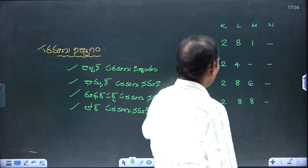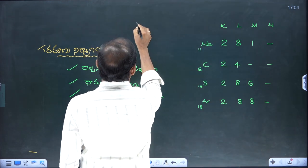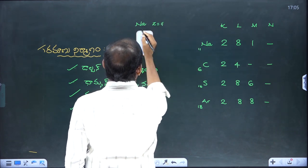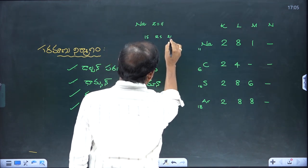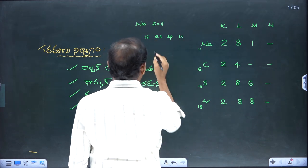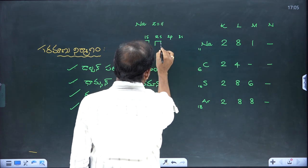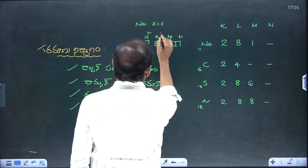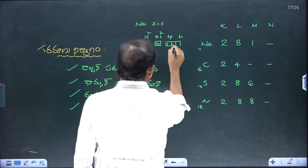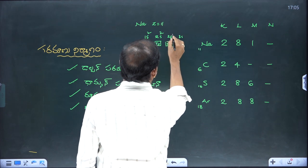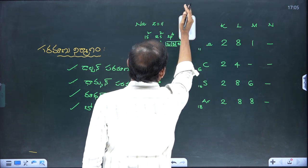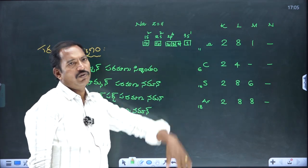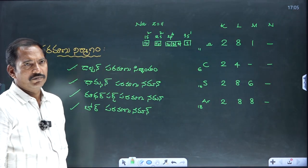Now we look at the quantum mechanical model and Moeller diagram. The notation is: 1s², 2s², 2p, 3s, 3p. Using the Moeller diagram, the configuration is written as 1s¹, 2s¹, 2p, giving: 1s² 2s² 2p⁶ 3s¹.